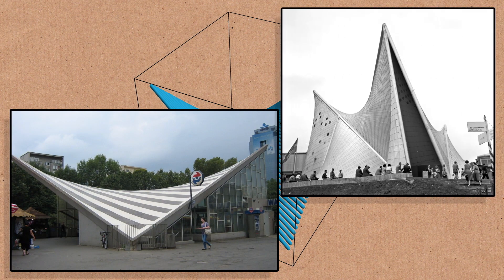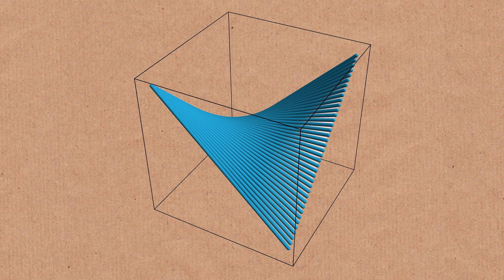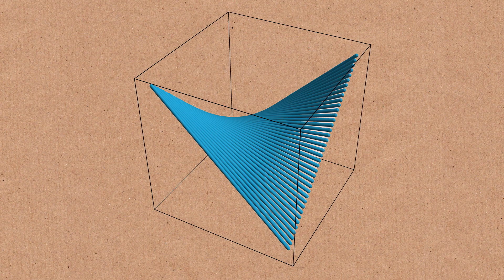You see a lot of ruled surfaces in architecture because it's very easy to get straight objects and then it's just about the way you assemble them that gives you curvature. They're all still straight, everything you do about them is straight.